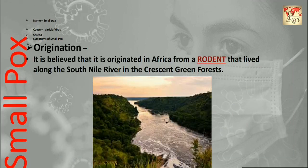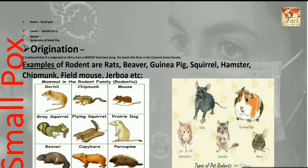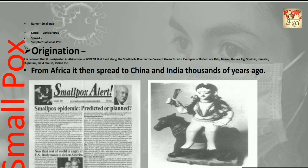Regarding the origination of smallpox, it is believed that it originated in Africa from a rodent that lived along the South Nile River in crescent green forests. Examples of such rodents include rats, beaver, guinea pig, squirrels, hamster, chipmunk, field mouse, gerbil, and others. From Africa, it then spread to China and India thousands of years ago.